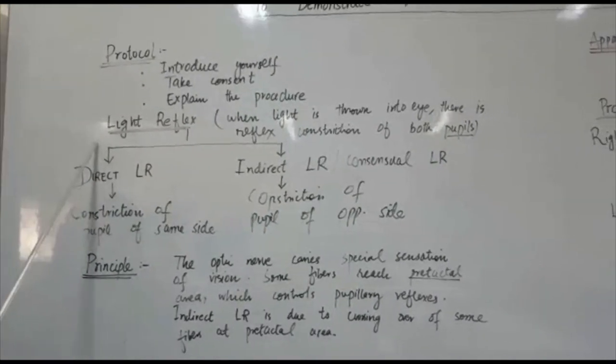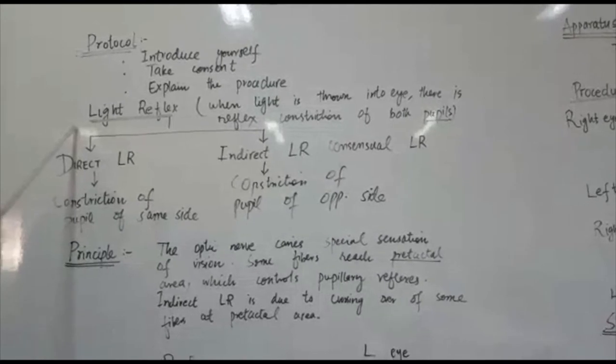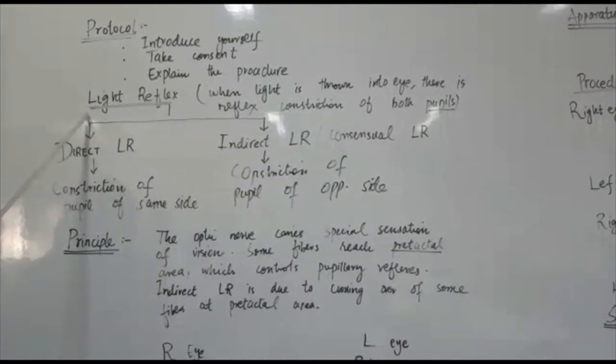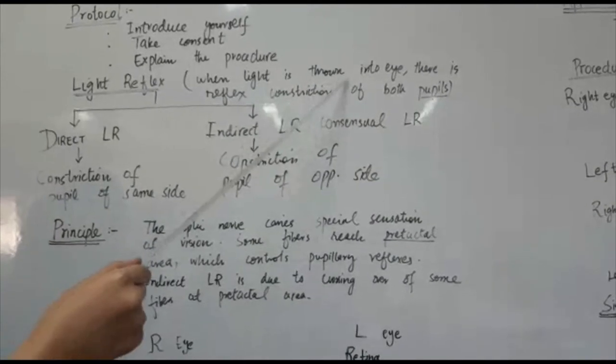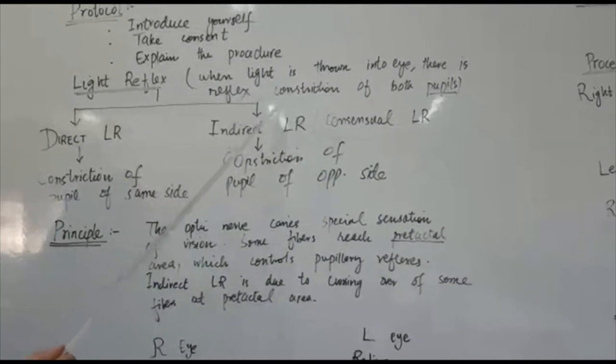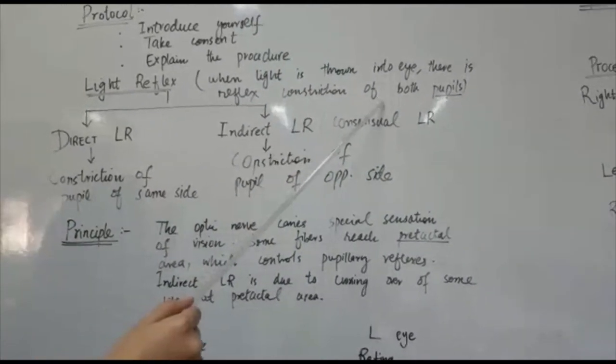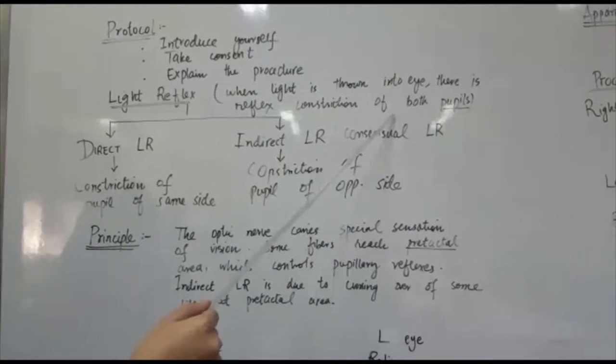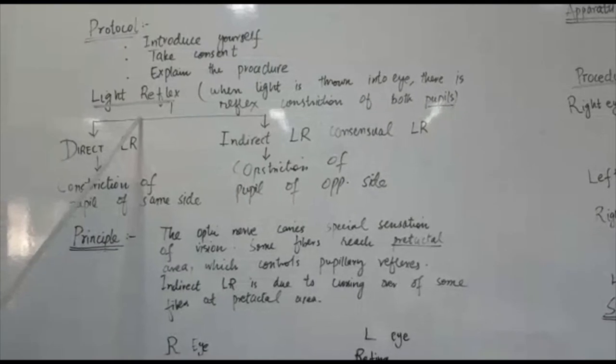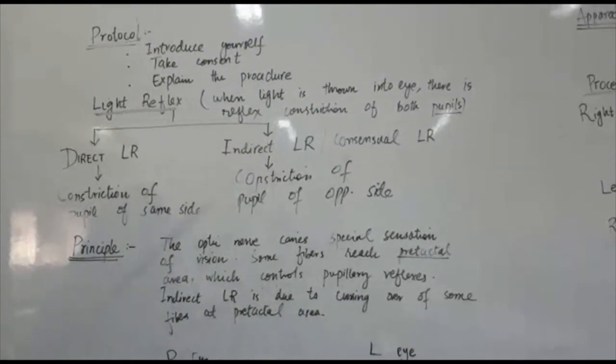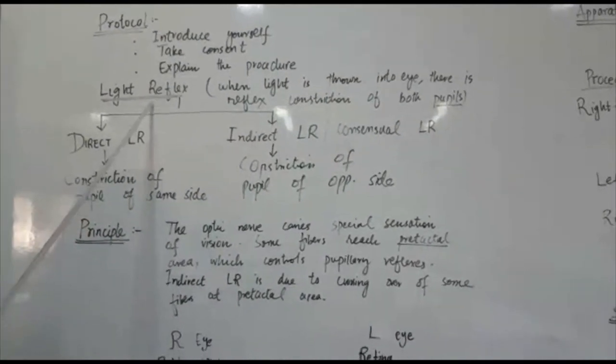Now let us move to what is light reflex. So whenever light is thrown into the eye of a person, there is reflex constriction of both the pupils. This reflex constriction of the pupils is called light reflex. That is the reason we also call this reflex pupillary reflex.